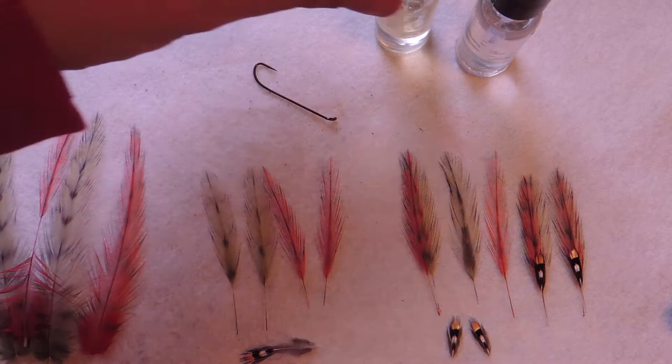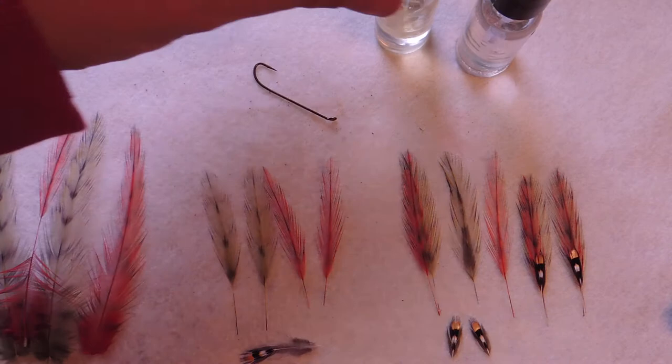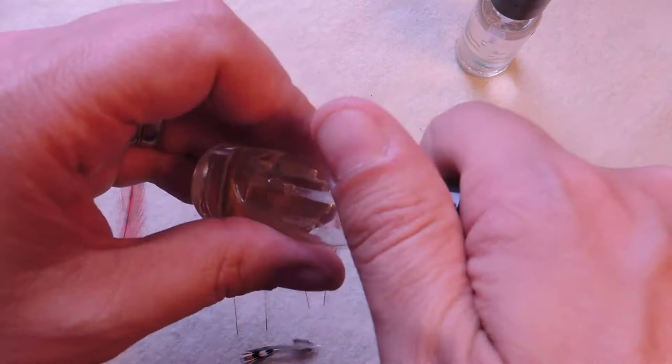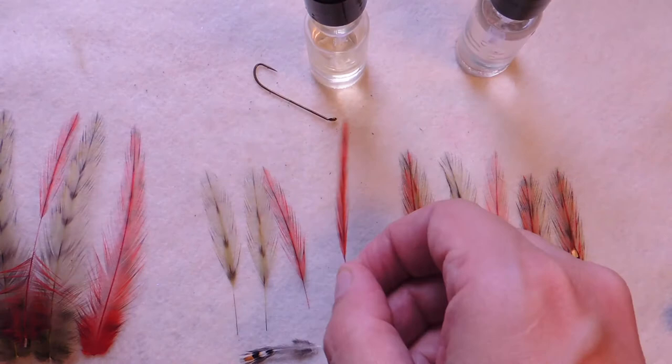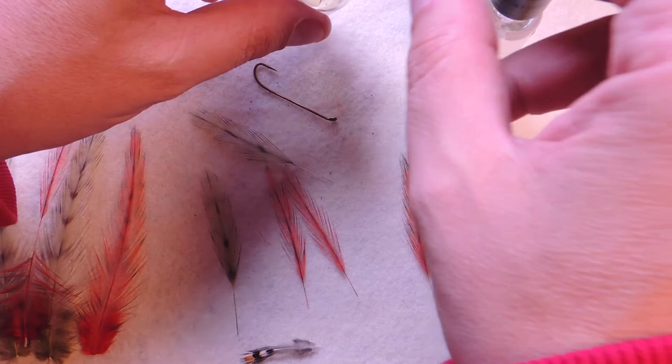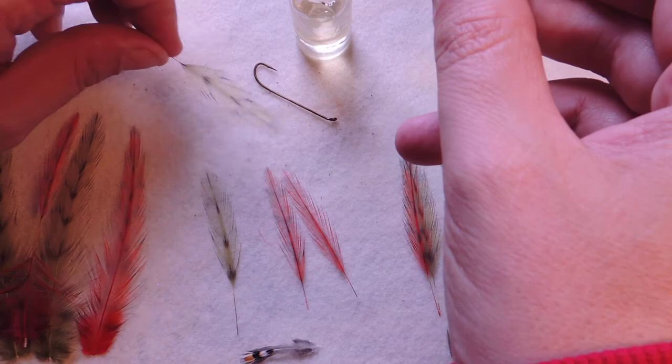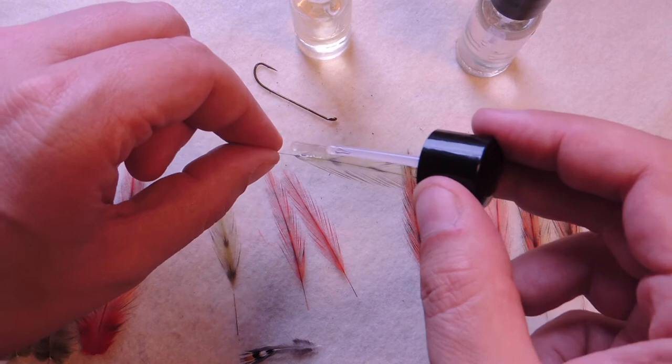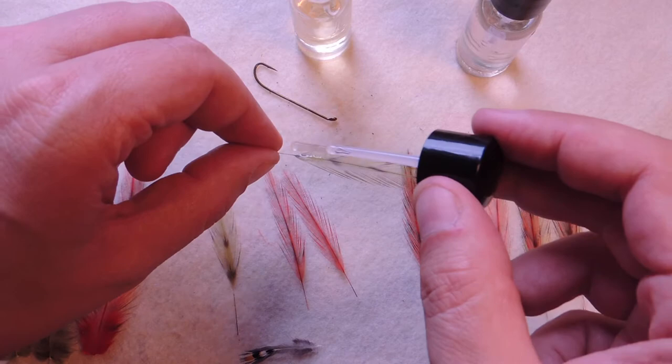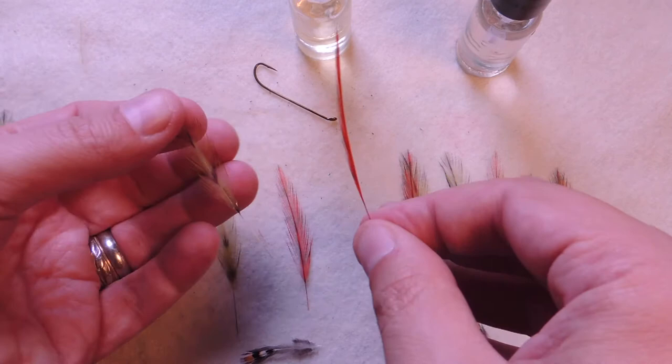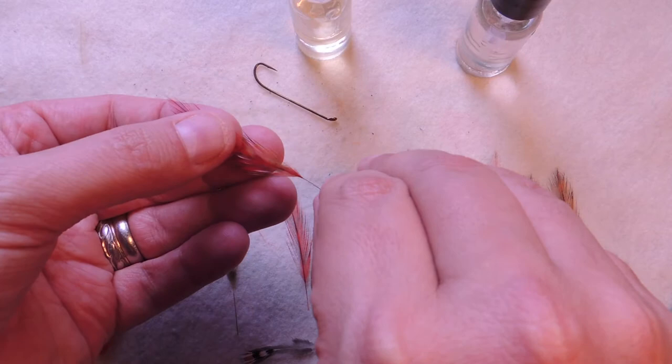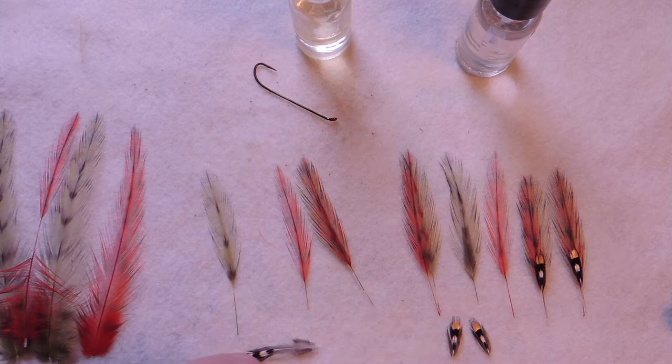Then I just strip those off. Then I trim the stem on that. Once we have our hackles ready I take some of this thickened hard as nails. I'm just going to take the inside hackle, put a small bead of glue on there. Then you just want to match up your red and your olive together. We'll let that set.